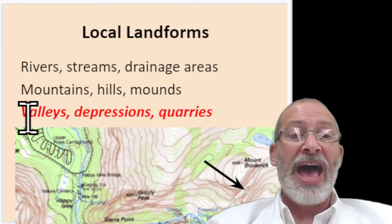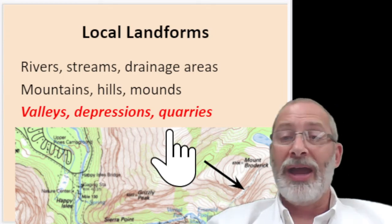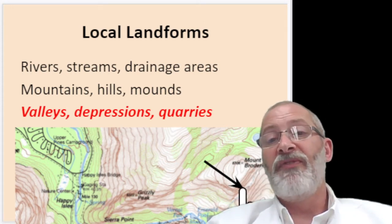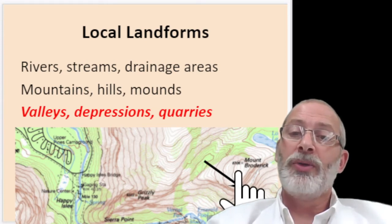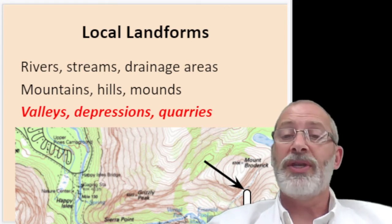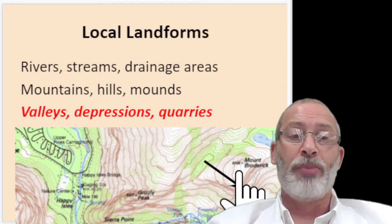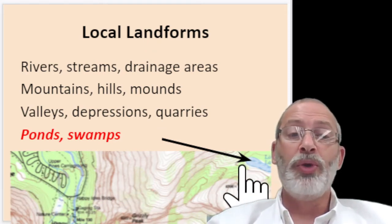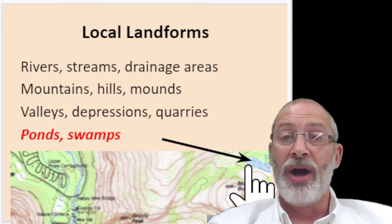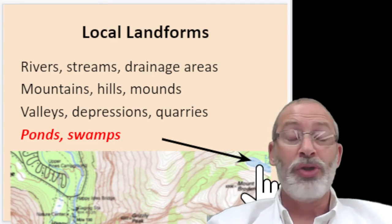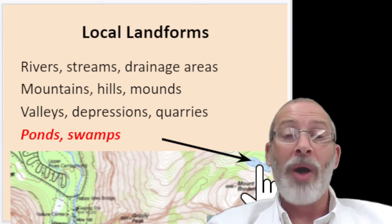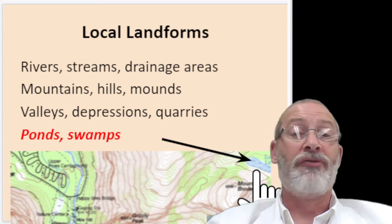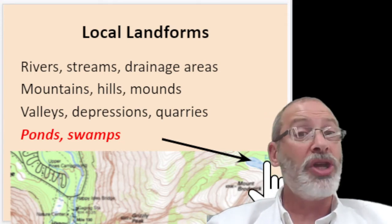Other features include valleys, depressions, and quarries — these are lower areas on a contour map. Reading contour lines tells us this is a deep valley surrounded on both sides by mountains. You'll learn how to read these shapes to identify low versus high points. Ponds and swamps are also visible — a whole blue area is obviously a pond, while symbols that look like lily pads represent swampy areas you might want to avoid on a hike, unless you're studying frogs or turtles.